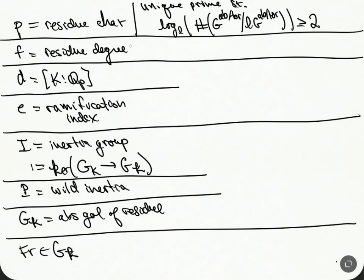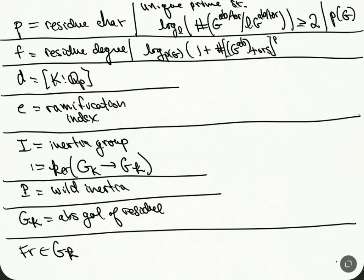For f, it's similar and uses the definition of p. We call this p(G). So f is the residue field degree: we take the log base p of one plus the size of the torsion of the abelianization, then raise it to p(G). There's a description in terms of Teichmüller lifts — the torsion part of the unit group corresponds to Teichmüller lifts. We define this to be F(G), and that's how we recover the residue degree.